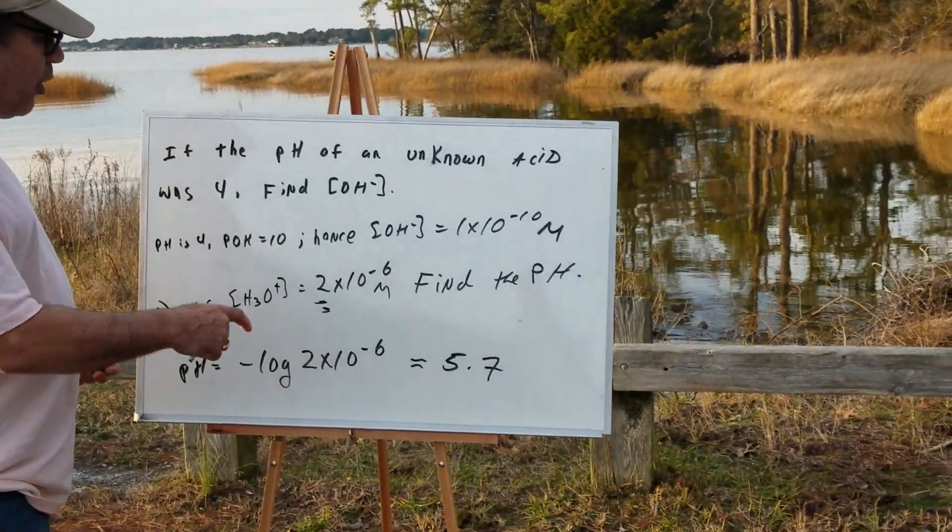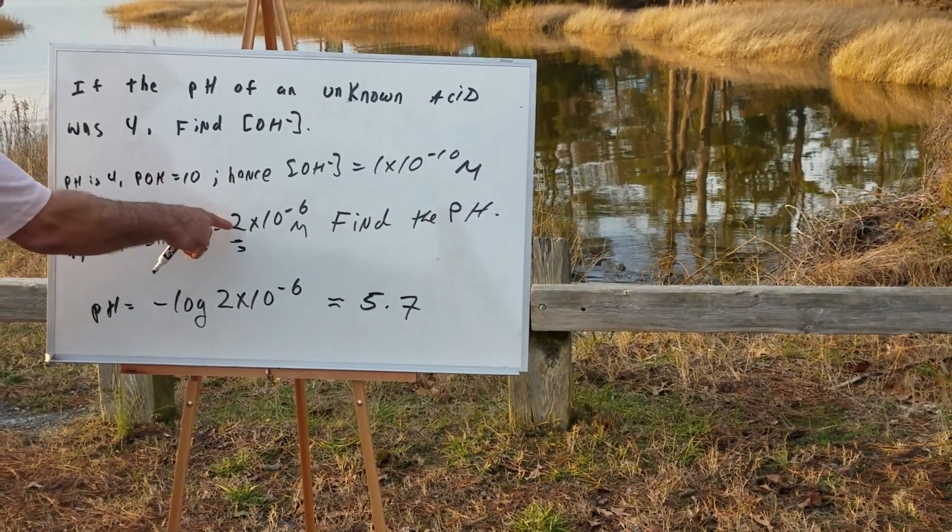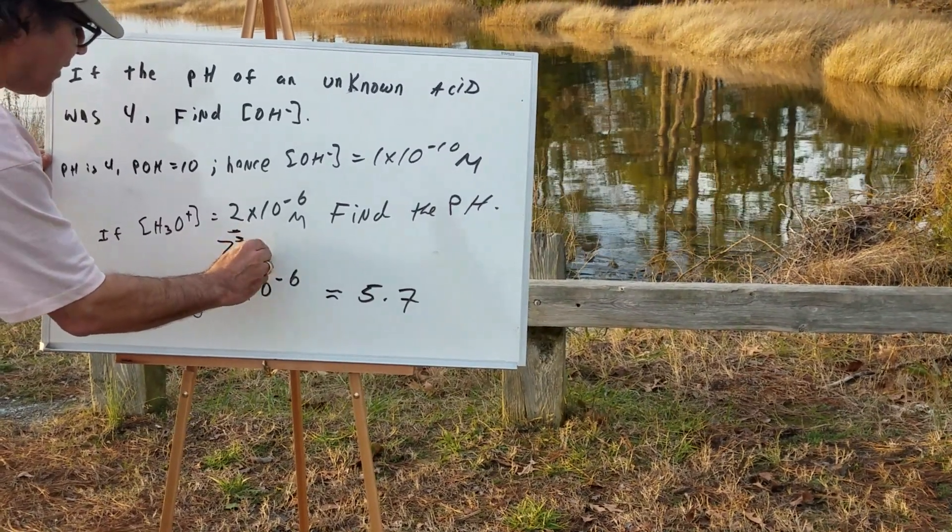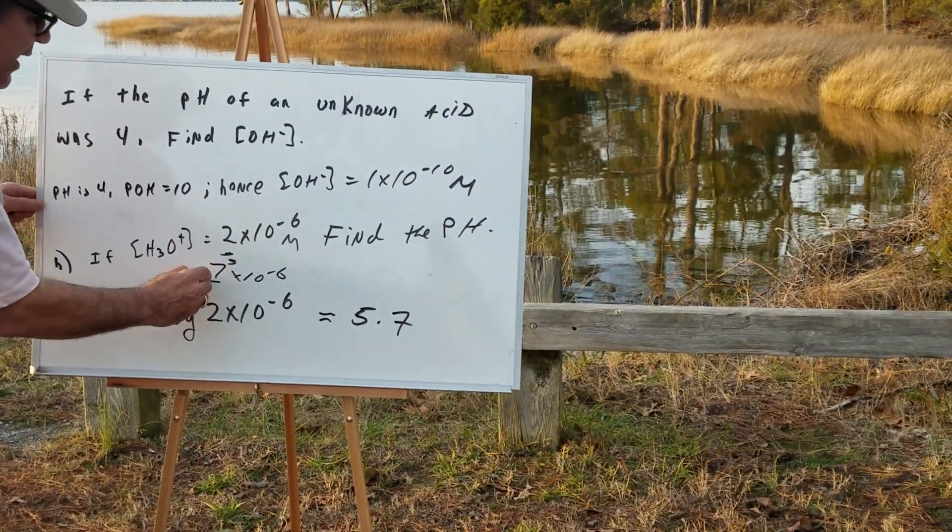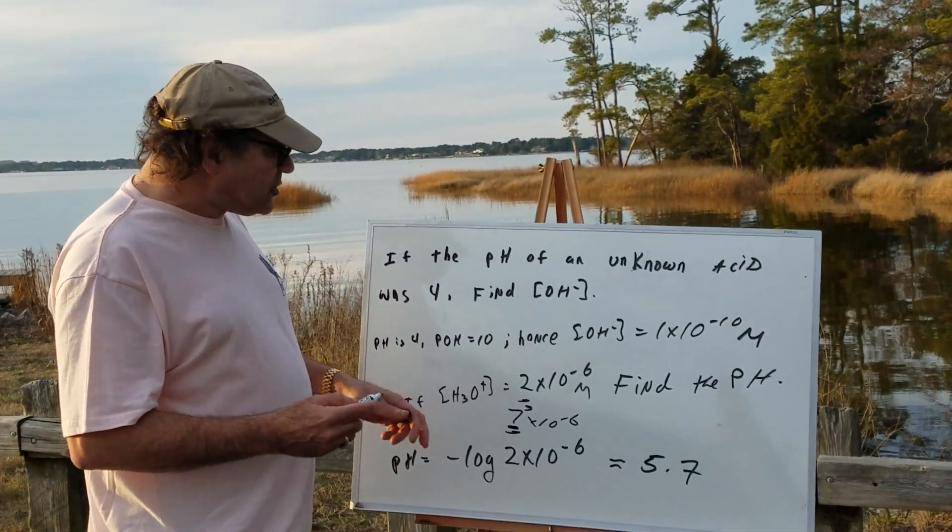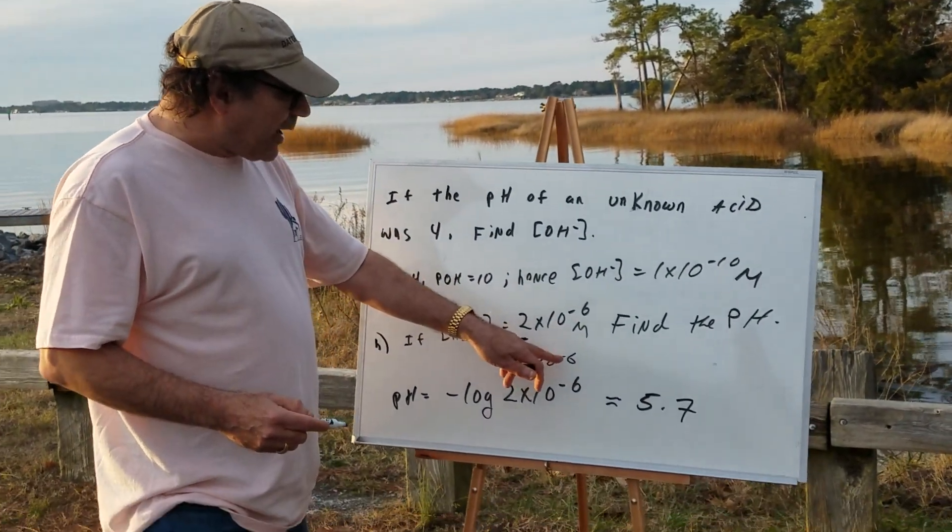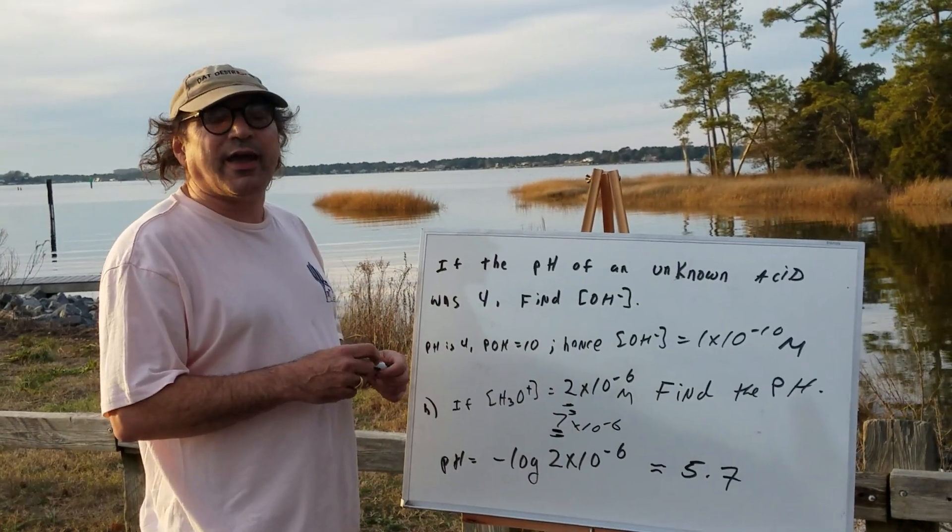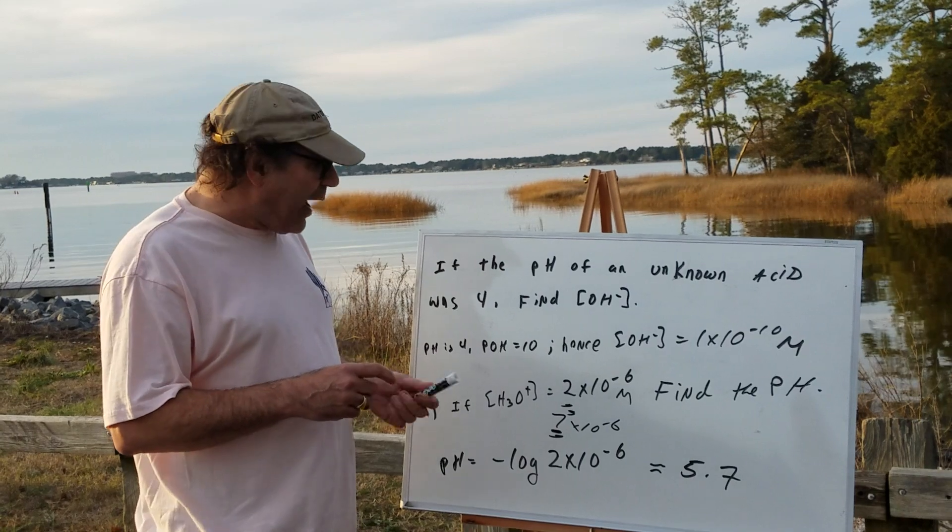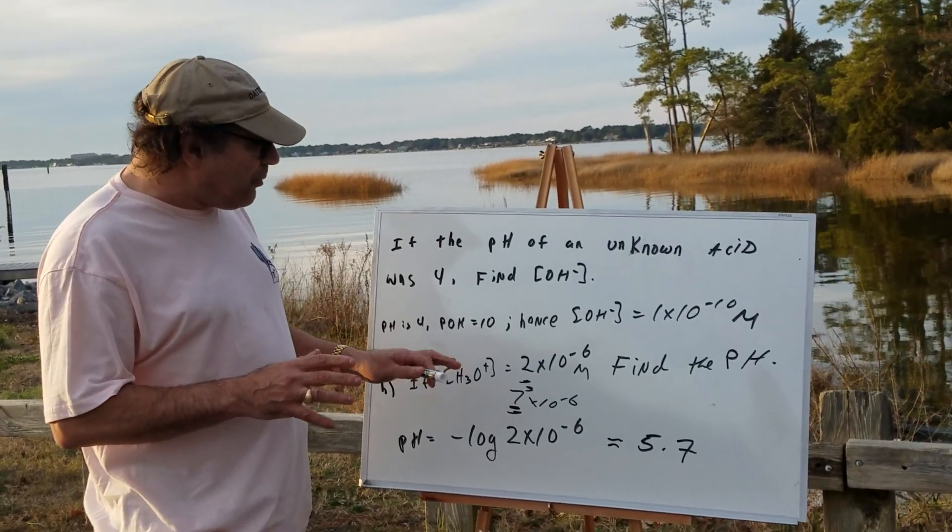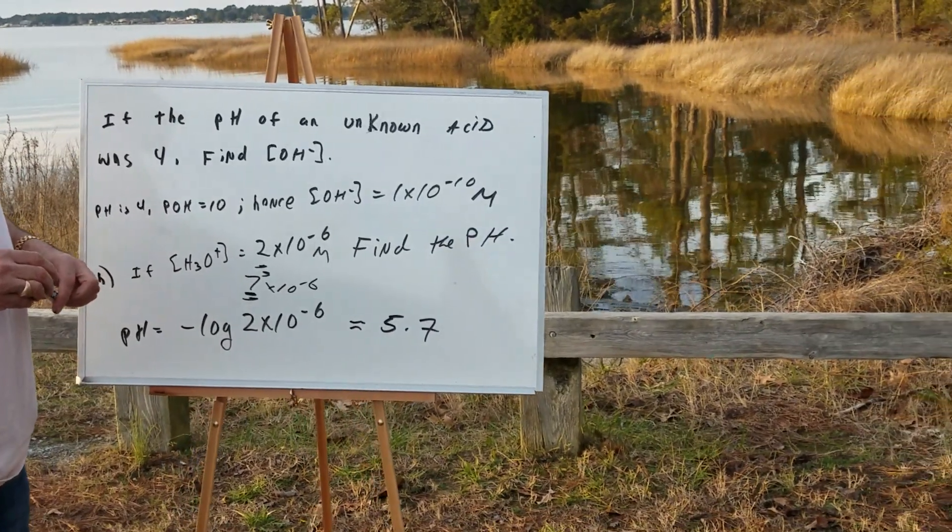Now, just to make sure you understand, what if I would have said this concentration was, say, 7 times 10 to the minus 6th? Well, as you can see, a 7 is really far away from the number 1. So that means if it was 1 times 10 to the minus 6th, it would be 6. But 7 times 10 to the minus 6th, you're going to come down a lot. So that would be up around 5.2. So I hope you can get a feel for how to do these logarithms.